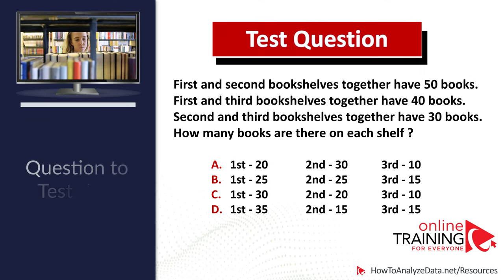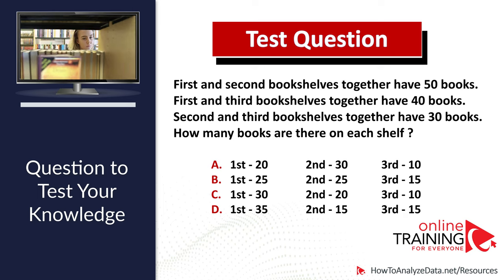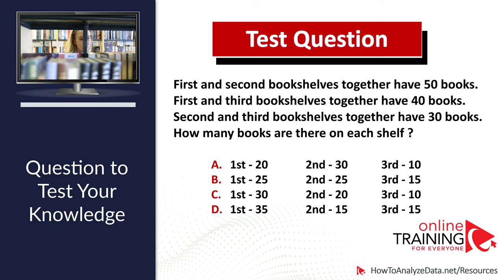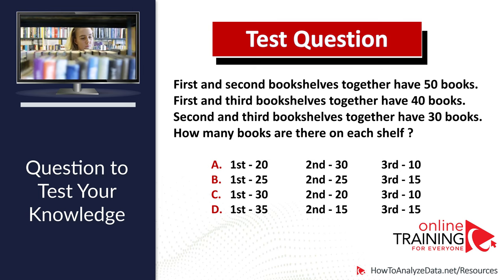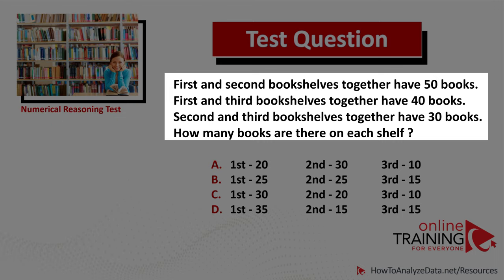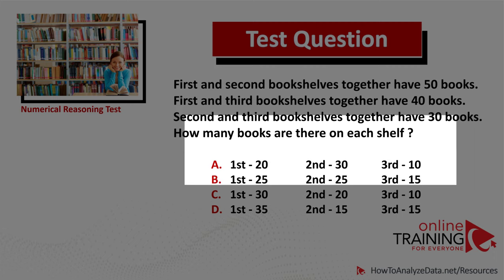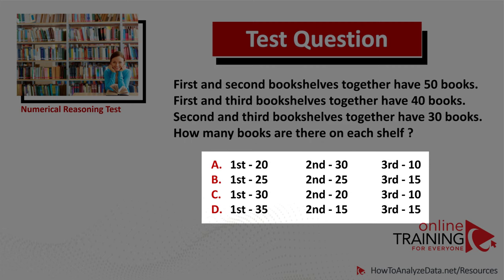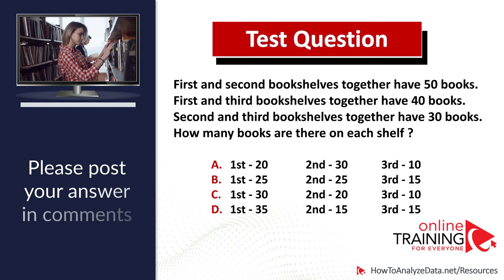Here's a question for you to try — please post your answer in the comment section. First and second bookshelves together have 50 books. First and third bookshelves together have 40 books. Second and third bookshelves together have 30 books. How many books are on each shelf? Choices: A) 20, 30, 10; B) 25, 25, 15; C) 30, 20, 10; D) 35, 15, 15.